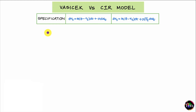In this video let us take a comparative look at two one-factor short-term interest rate models: the Vasicek model and the Cox-Ingersoll-Ross model, also called the CIR model. This is FRM Part 2, Book 1, the chapter on the art of term structure models.